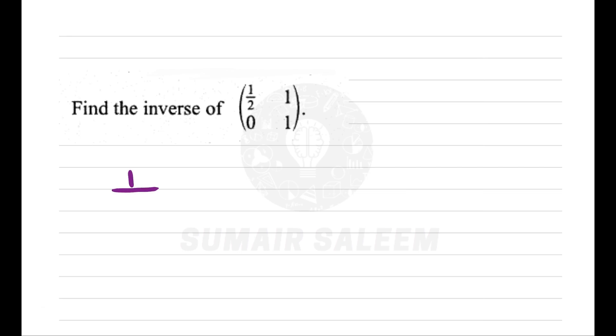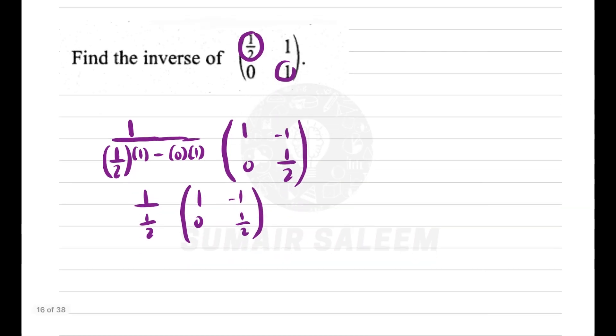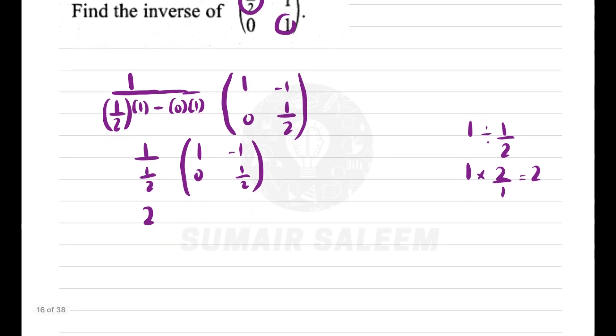How do you get the inverse? 1 upon determinant, which is 2. Switch AD positions to get minus 1 and 3. Change BC signs: minus 2p becomes plus 2p, and p becomes minus 2.5.